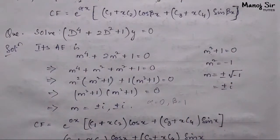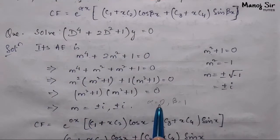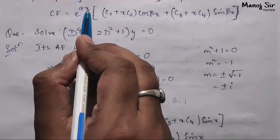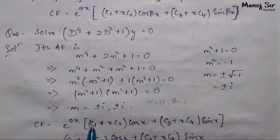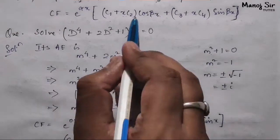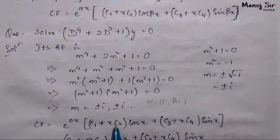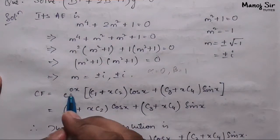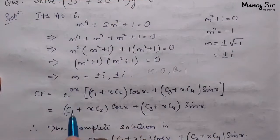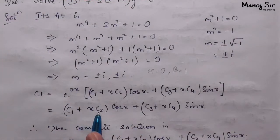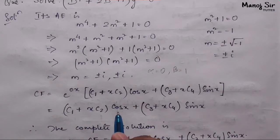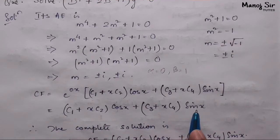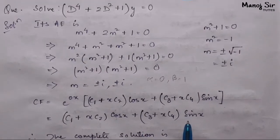Since alpha equals zero, we have e to the power zero·x, which is e⁰ = 1. So the complementary function becomes: (c1 + x·c2)·cos(1·x) plus (c3 + x·c4)·sin(x). Substituting beta = 1: (c1 + x·c2)·cos(x) + (c3 + x·c4)·sin(x).